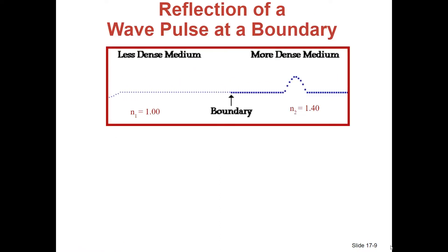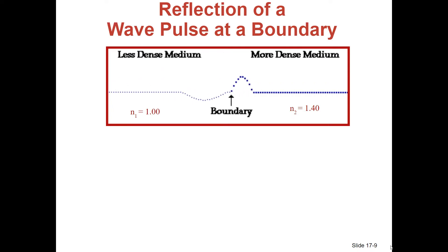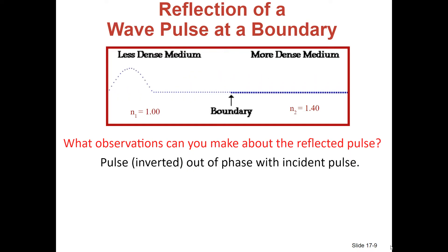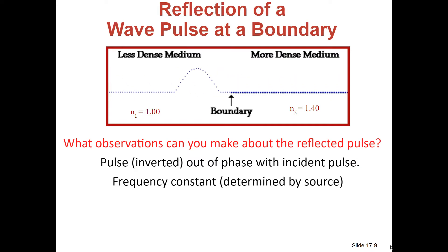Let's review reflection of a wave pulse at a boundary. Here we're going from a less dense to a more dense medium — N1 is 1, N2 is 1.40. The reflected pulse is out of phase with the incident pulse; it's inverted. We say it's pi shifted. We'll be talking about that in our thin film calculations. The frequency remains constant because frequency is always determined by the source — it doesn't change as it reflects back.